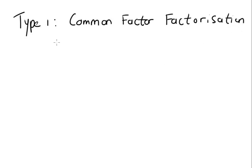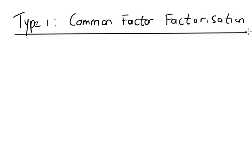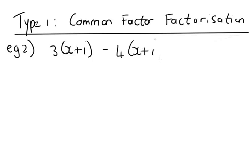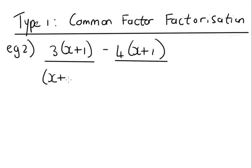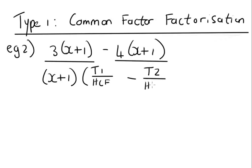The second type of example in terms of common factor factorization is when we have brackets. If we look at example 2, we've got 3 multiplied by x plus 1 minus 4 multiplied by x plus 1. In this case, how many terms do you see? There's one term there and another term there, so there are two terms. What you'll notice is that x plus 1 is our highest common factor. We take out x plus 1 as our highest common factor and do the same thing — taking term 1 divided by the highest common factor, then term 2 divided by the highest common factor.